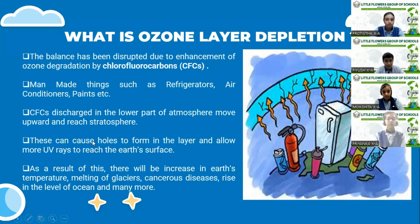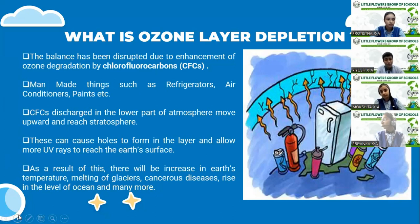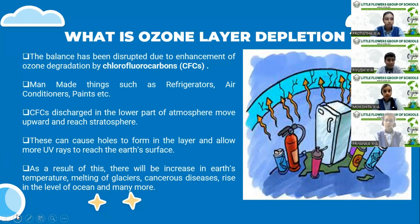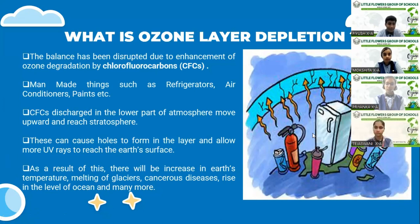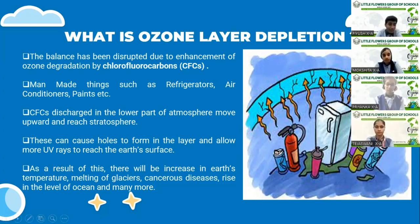After hearing so much about earth's atmosphere and ozone layer, let's move towards an important question: what actually is ozone layer depletion? The balance has been disrupted due to the enhancement of ozone degradation by chlorofluorocarbons, or CFCs. Man-made things such as refrigerators, air conditioners, paints, etc. have degraded the ozone to some extent. CFCs discharge in the lower part of the atmosphere, move upward, and reach the stratosphere. These can cause pores to form in the layer and allow more ultraviolet radiations to reach the earth's surface. As a result, there will be an increase in earth's temperature, melting of glaciers, cancerous diseases, rise in the level of oceans, and many more.